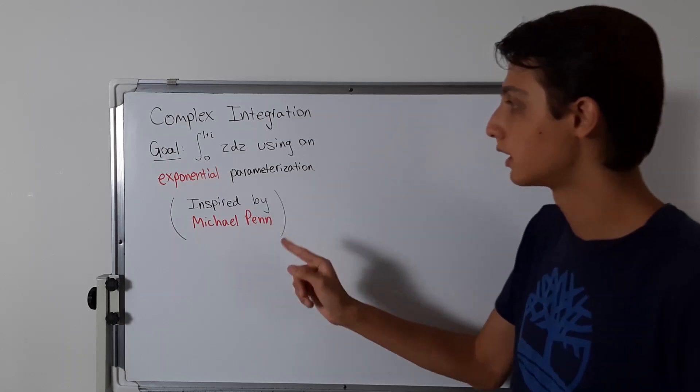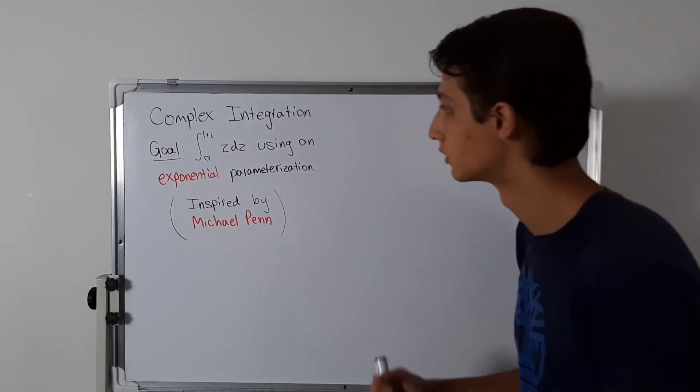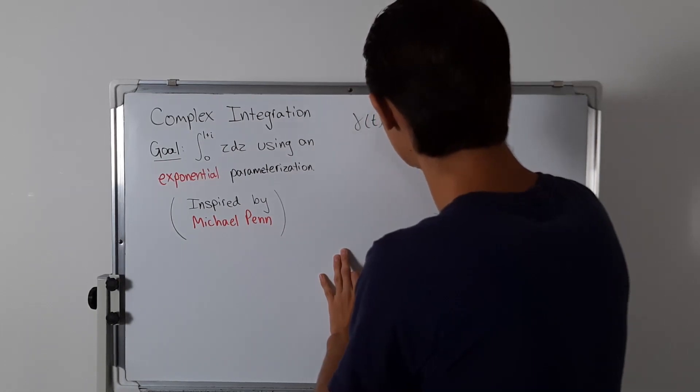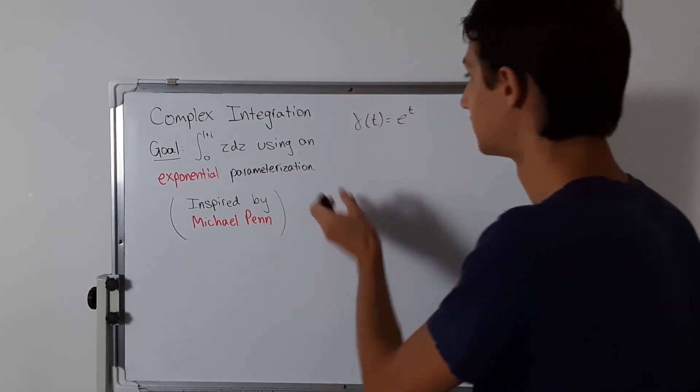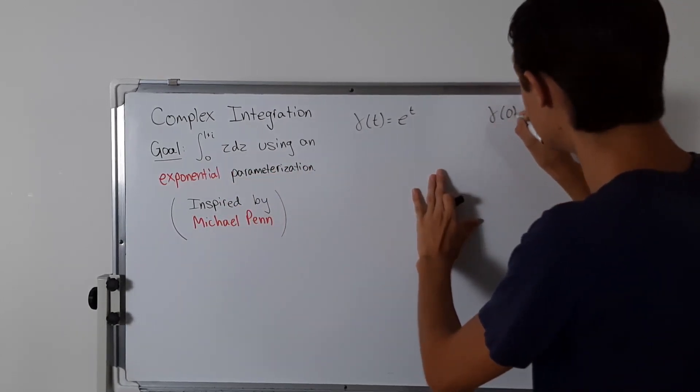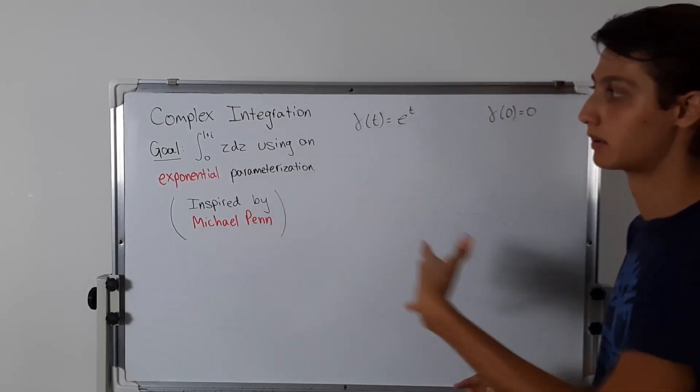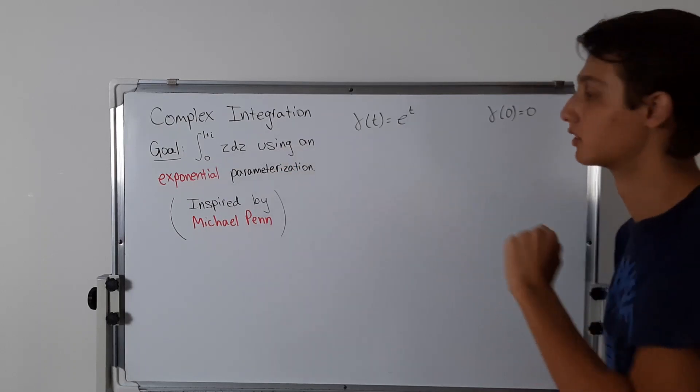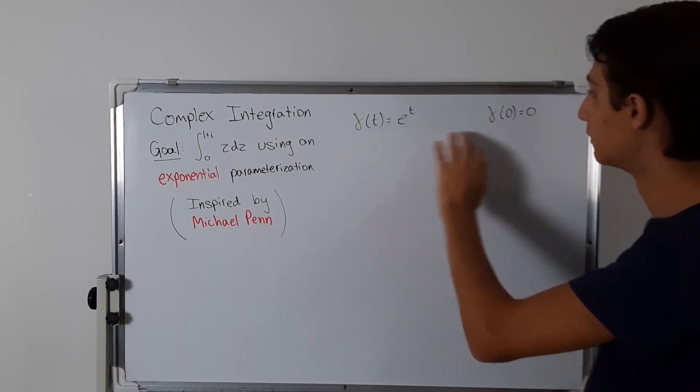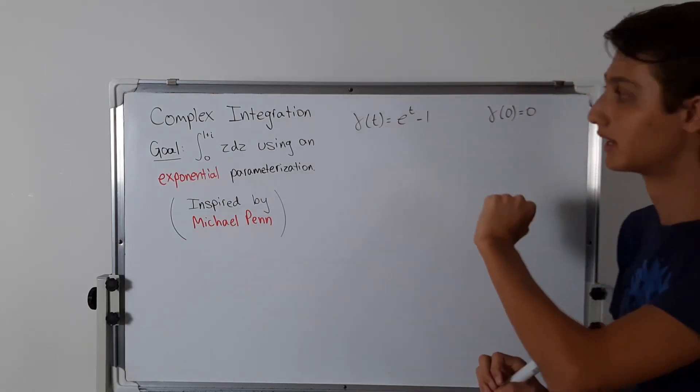I want to figure out some gamma parameterization, gamma of t, that's exponential. So gamma of t equals e to the t and then something else. For simplicity, I want to set gamma of 0 equal to 0. That's a good starting point, and from there we can figure out what the ending point is. So gamma of t equals e to the t, and e to the 0 is 1, so I'm just going to say e to the t minus 1.